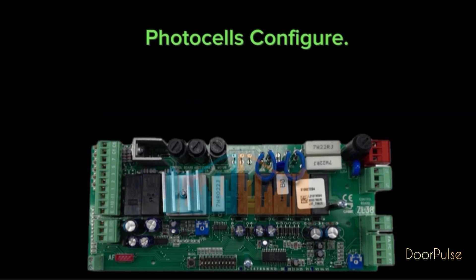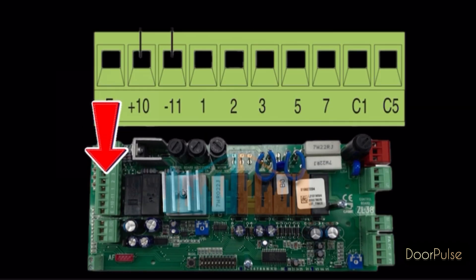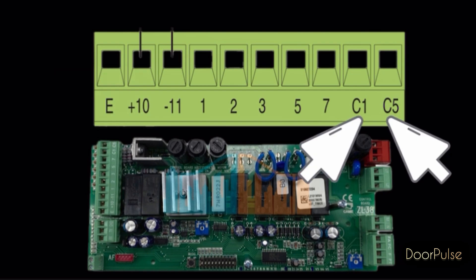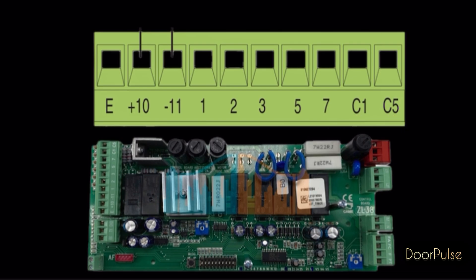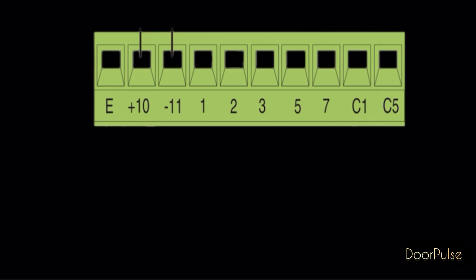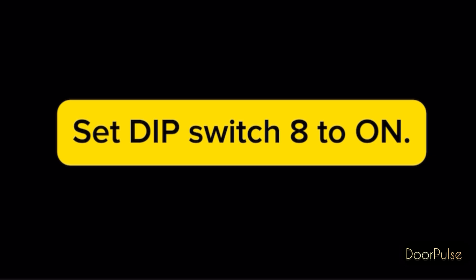Safety devices: photo cells configure. Here in this control board we have pin C1 and C5. Both are NC contacts. If photo cell don't need, set DIP switch 8 to ON.